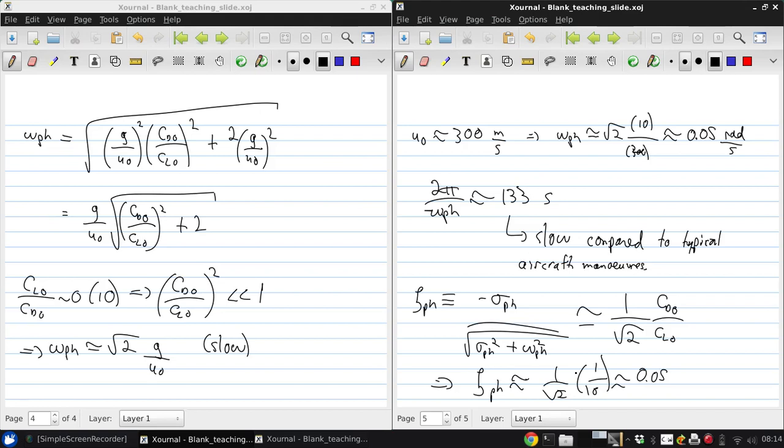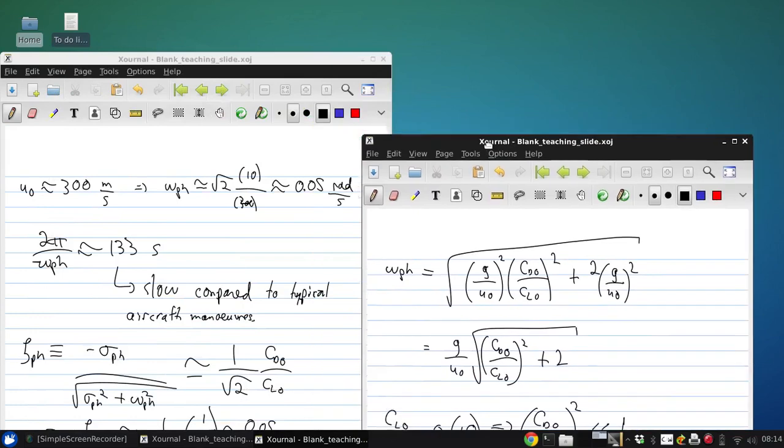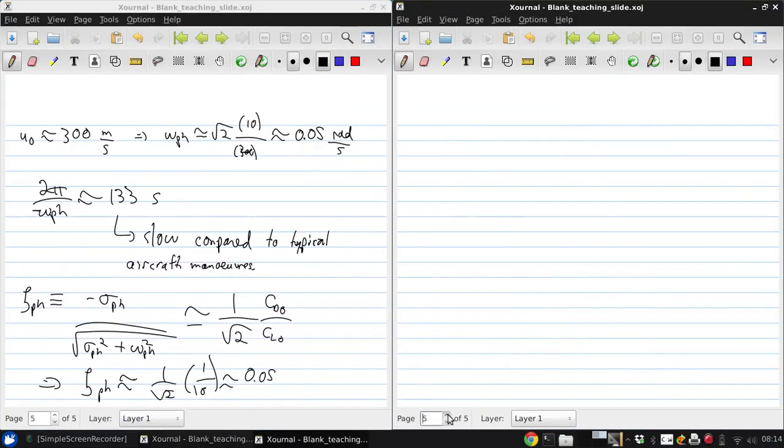So suppressing the fugoid because of this weak damping requires either an autopilot or active control by the pilot. Active control by the pilot isn't completely unreasonable because of how slow this mode is, so it's something that the pilot could respond to, but it would also be relatively easy to write an autopilot program to counteract this unwanted motion. So that's basically everything about our fugoid approximation. Now let's start looking at what happens with the short period.